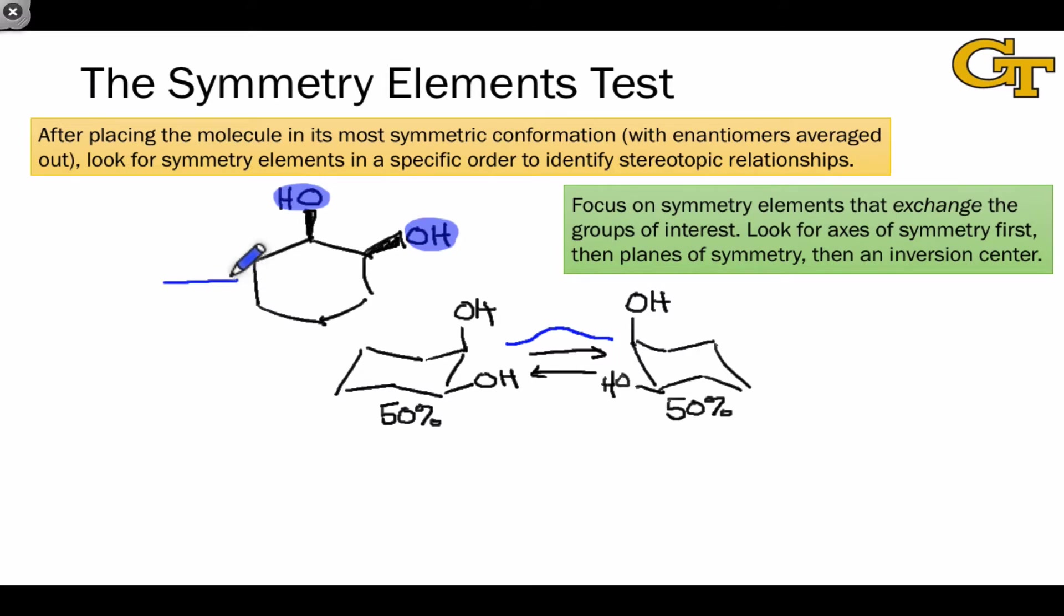we can think of the structure on the timescale of chemical reactions as being the average of the two enantiomeric conformations, which corresponds to this flat cyclohexane structure that we usually see. It's okay to use this to determine stereotopic relationships because, with respect to the processes we're interested in, namely chemical reactions of the hydroxyl groups, the average is the structure of the molecule in a sense.